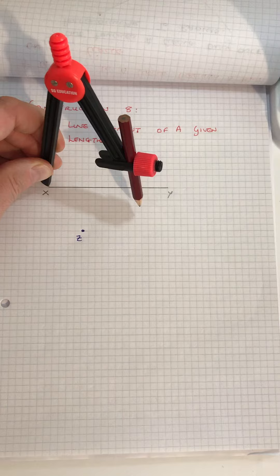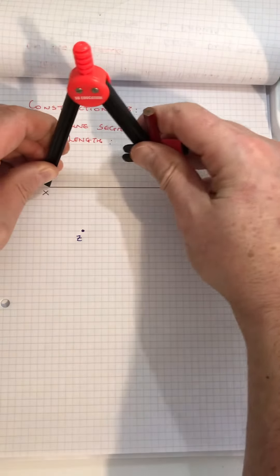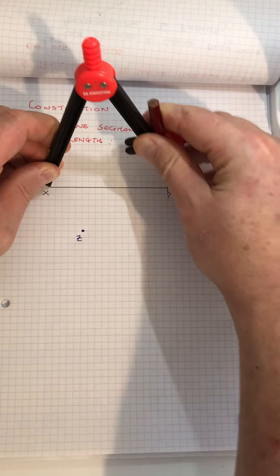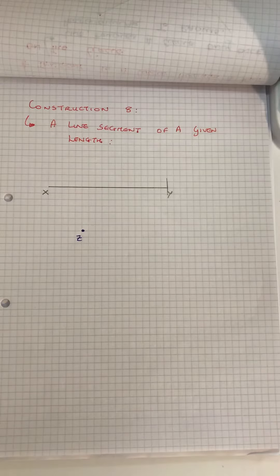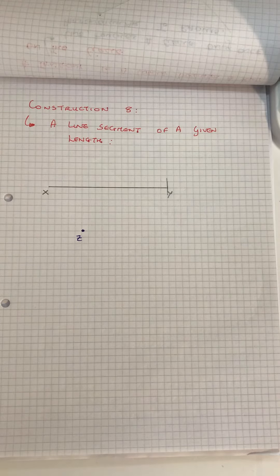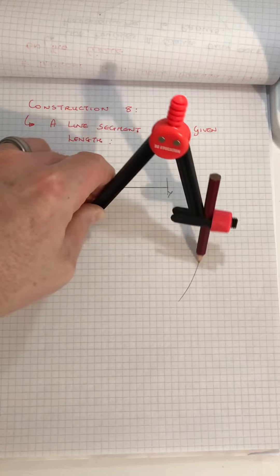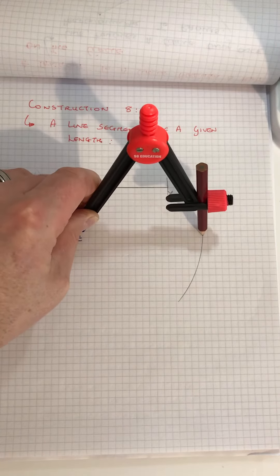of the line and extend it out to the other end of the line. That's the length of that line. Without using a ruler, I'm going to lift my compass and draw an arc.